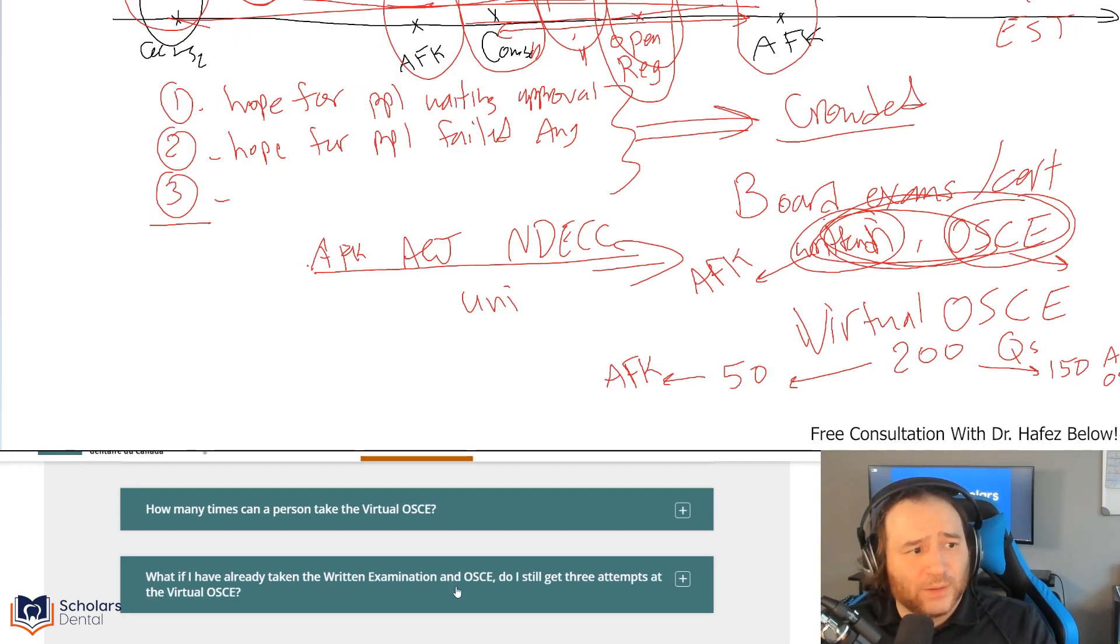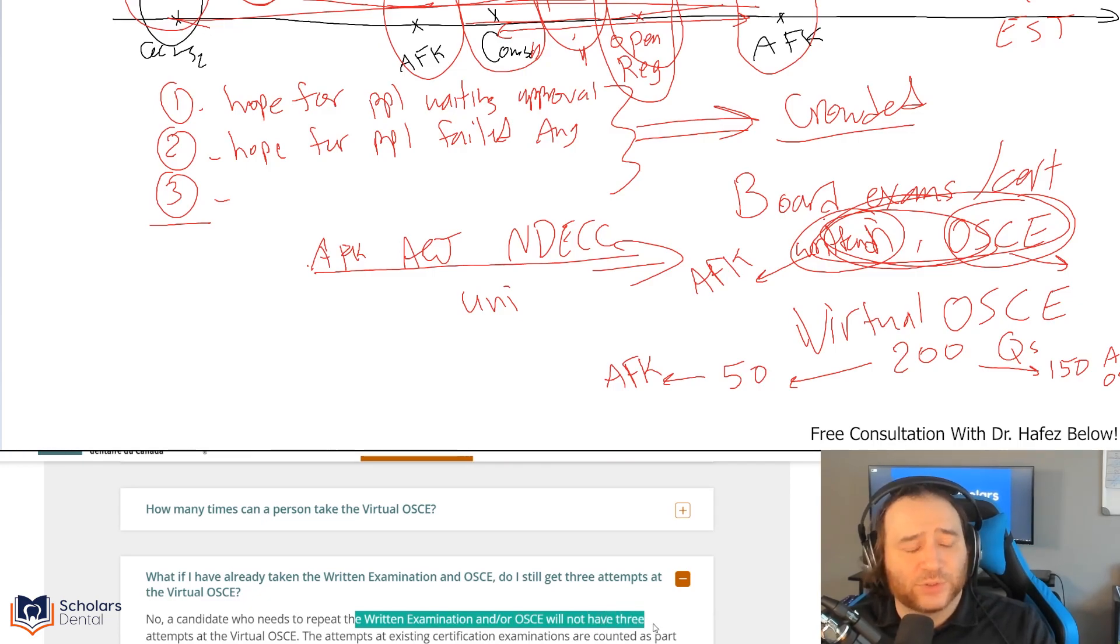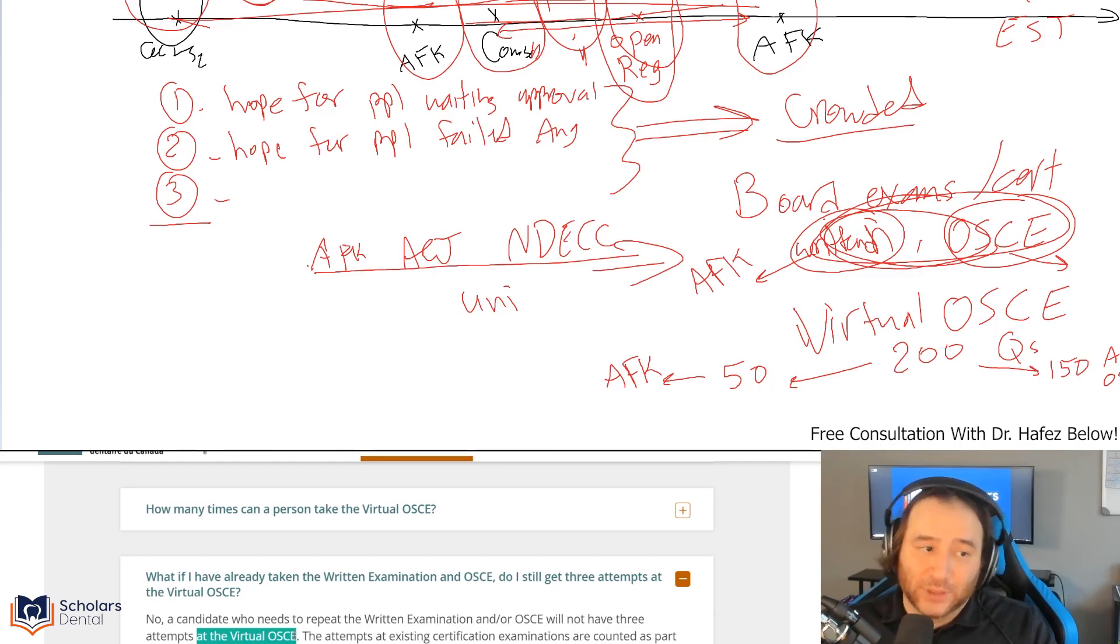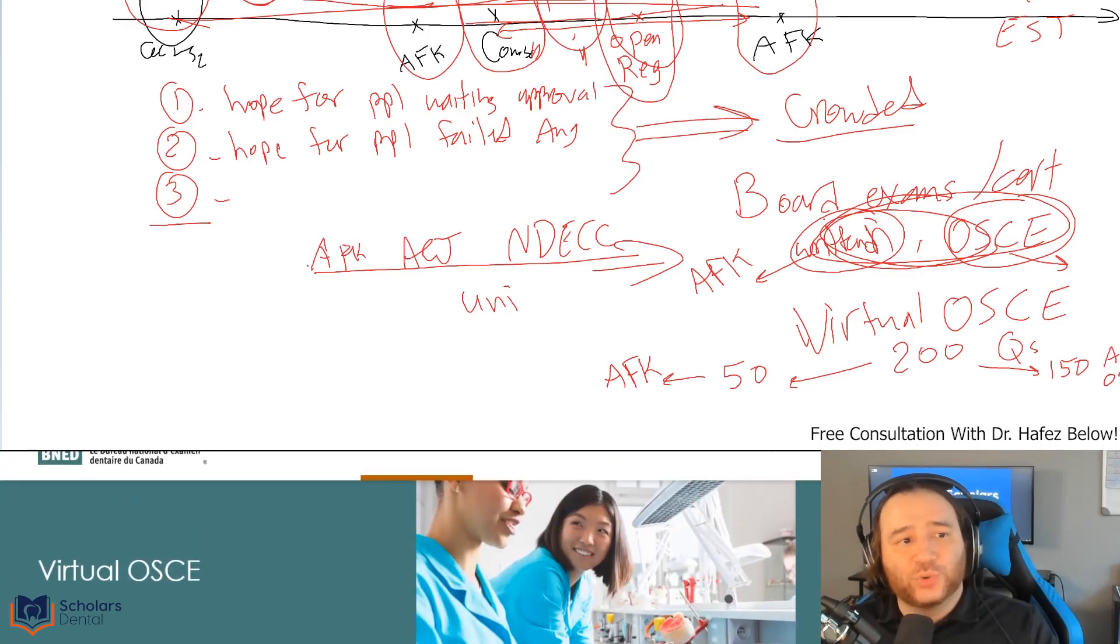What if I already taken the written exam and OSCE? A candidate who needs to repeat the written examination or OSCE will not have three attempts at Virtual OSCE. Your attempts from the previous exams up to 2022 count as an attempt even towards your Virtual OSCE. If you failed one of those, it counts.